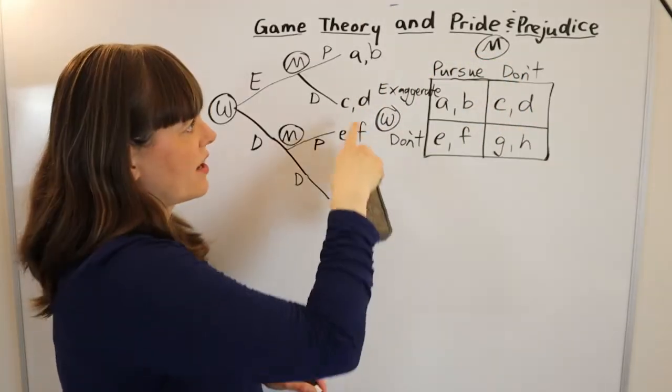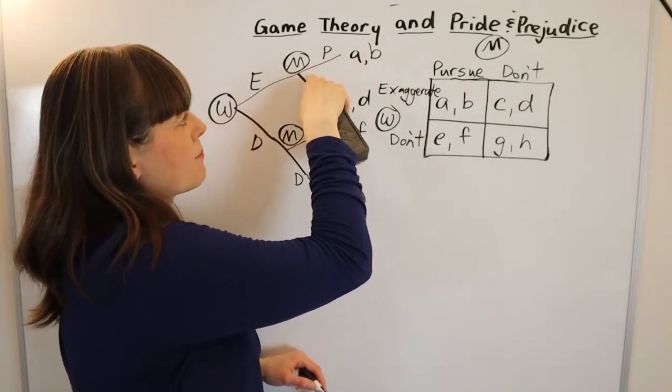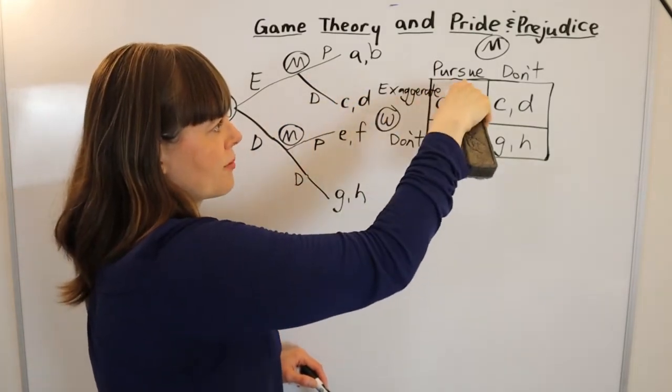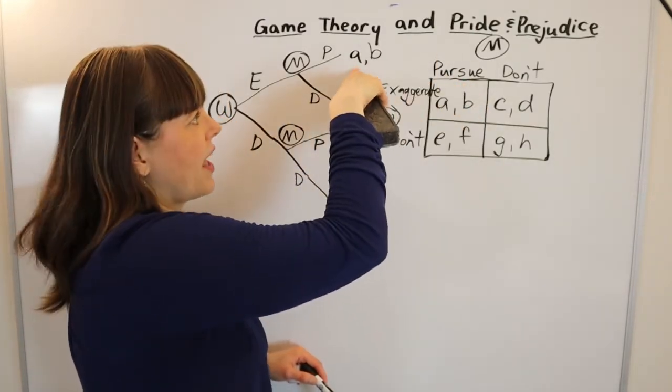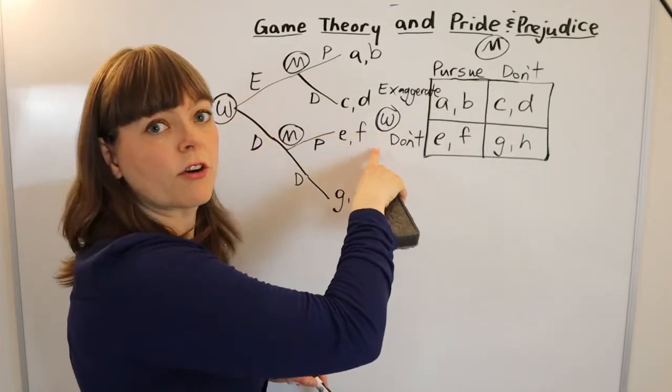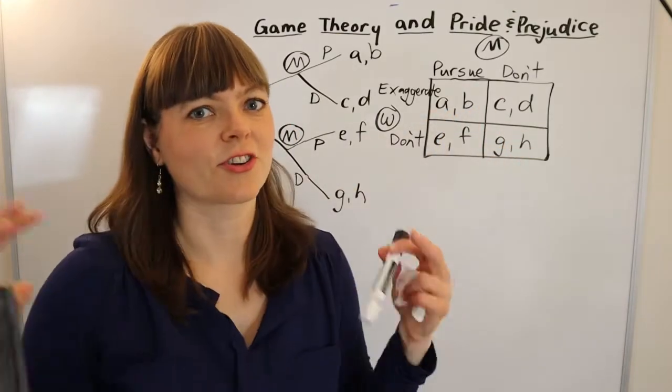Now I'm going to check that A and B is associated with exaggerate and pursue in this game tree and also over here. And also that A belongs to player one over here and A belongs to player one over here. And check all of the letters in these tables to make sure that's true.